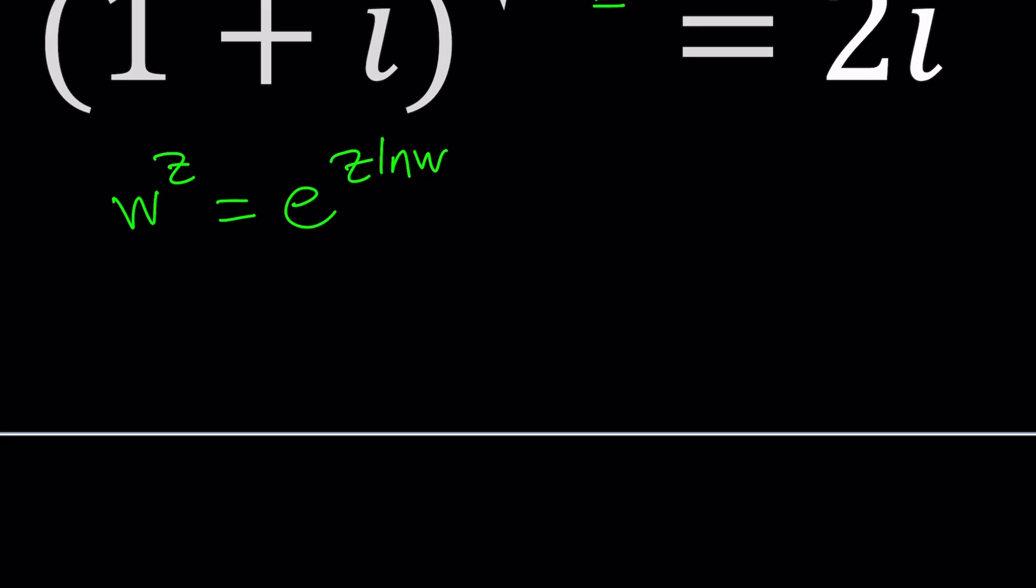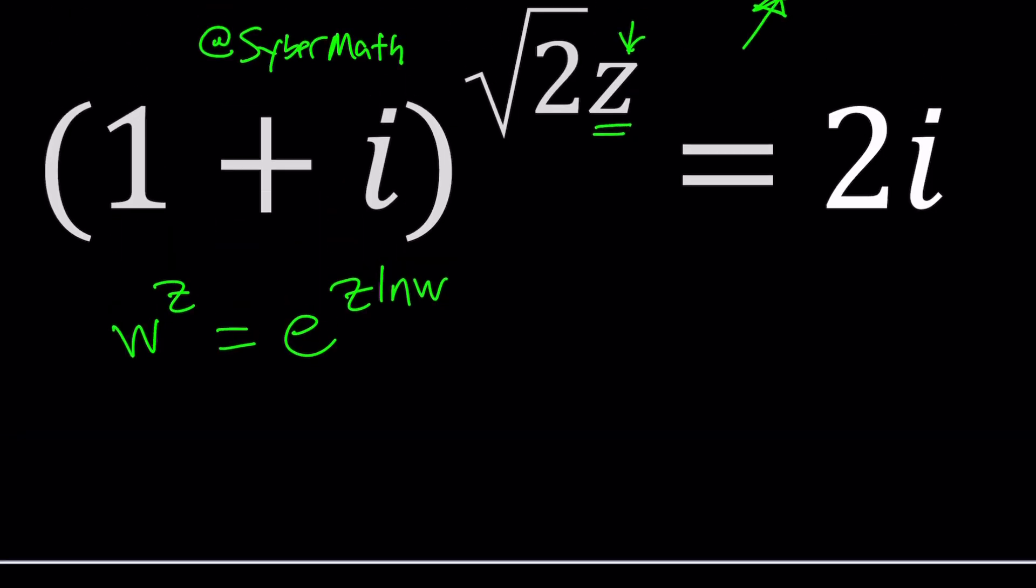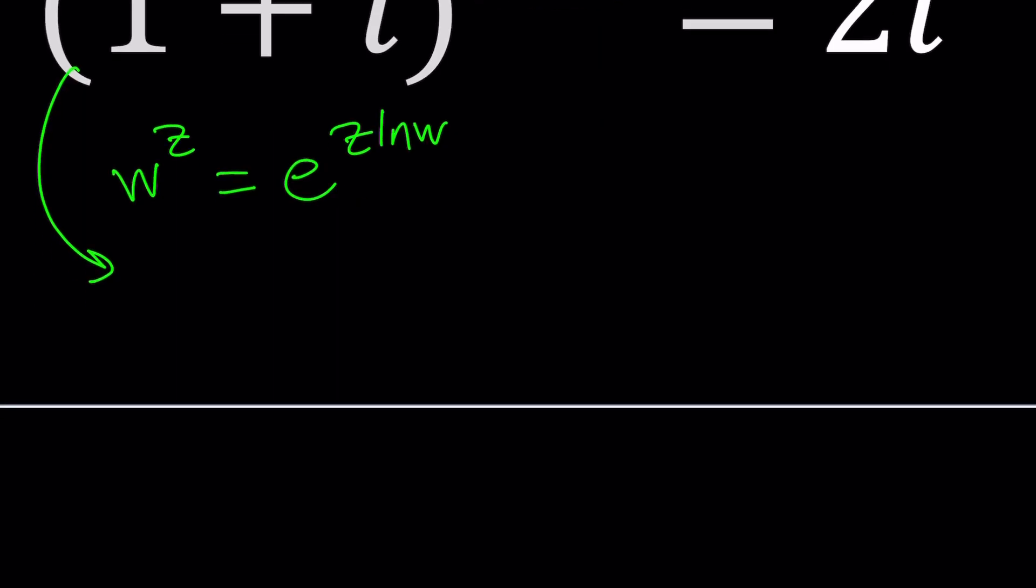Now if we apply it to this scenario, what is that going to look like? So here's what it's going to look like. This is our exponent which replaces z. So this expression right here is equal to e to the power root 2z, take it as an entity, multiply by ln of the base which is 1 plus i and that's equal to 2i.